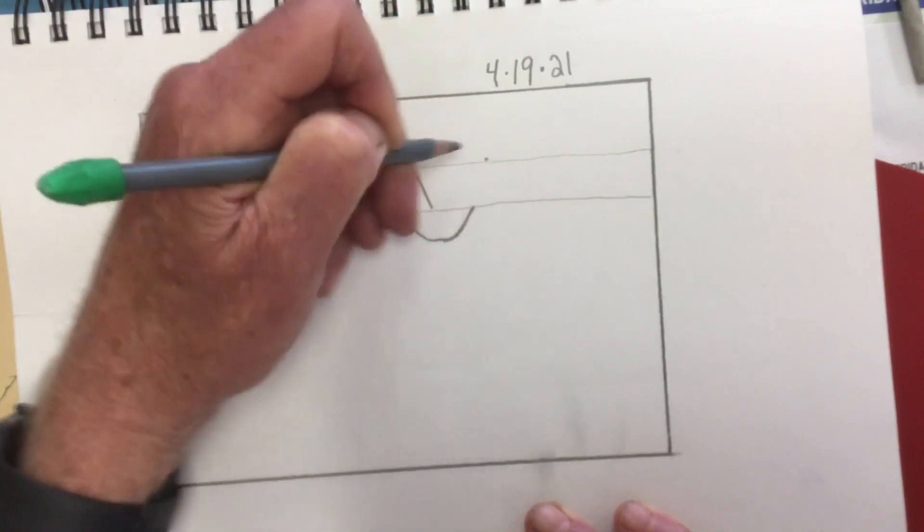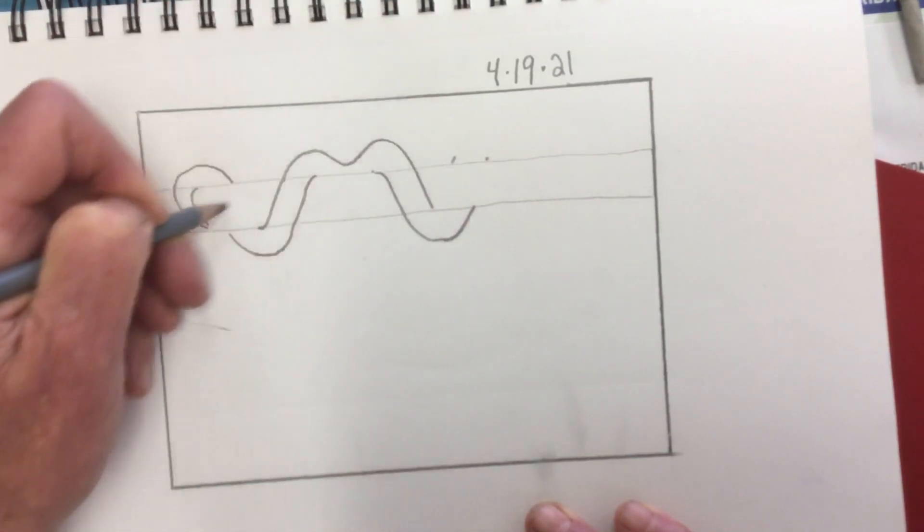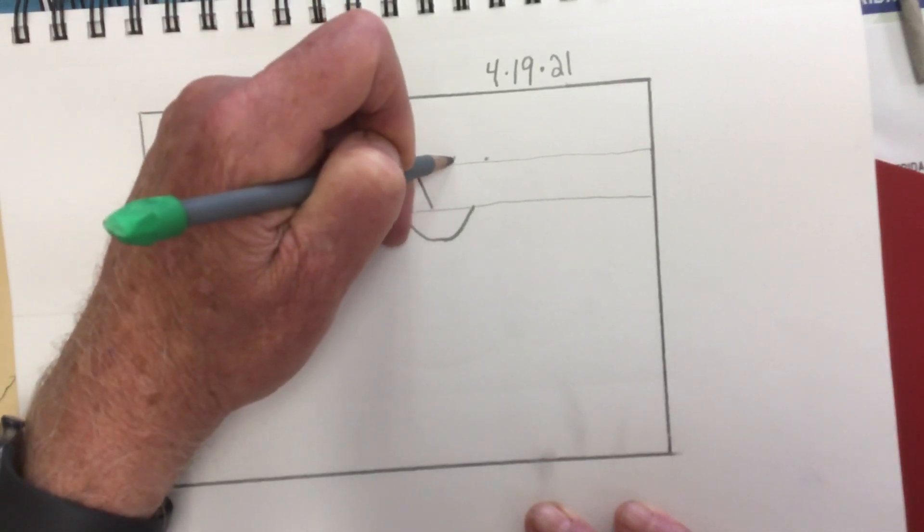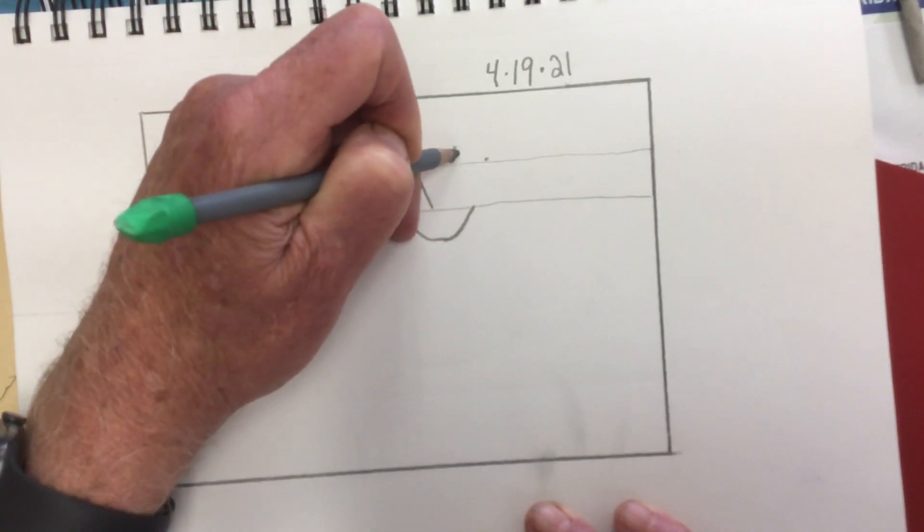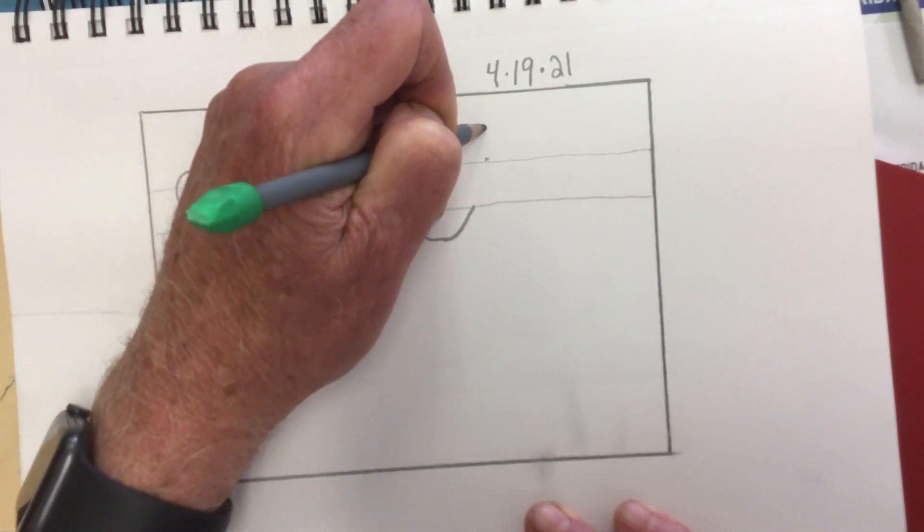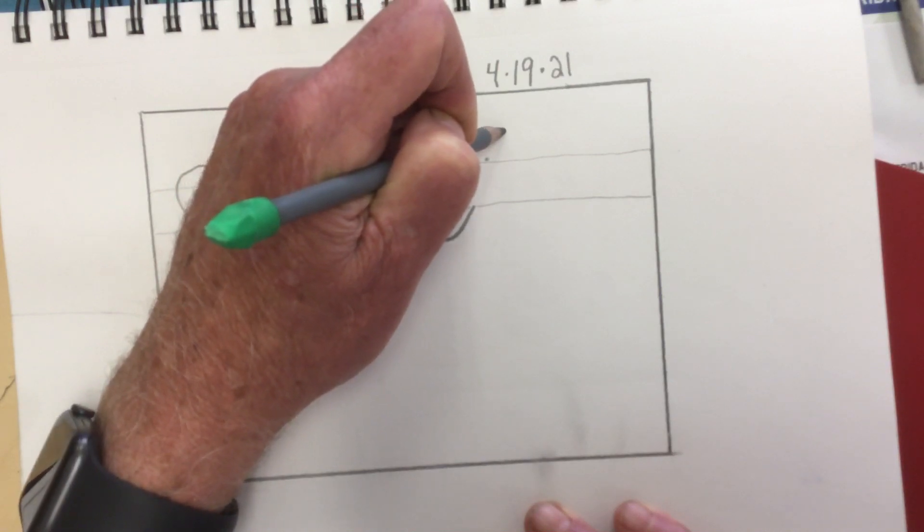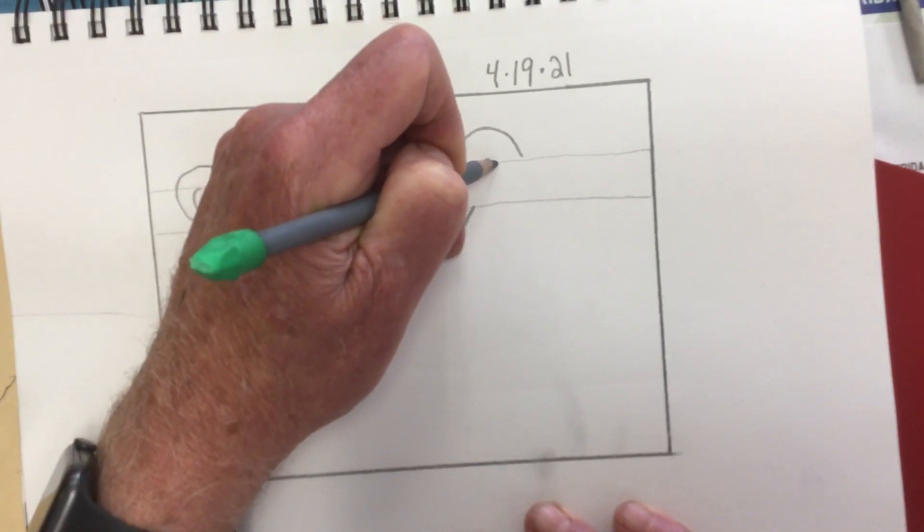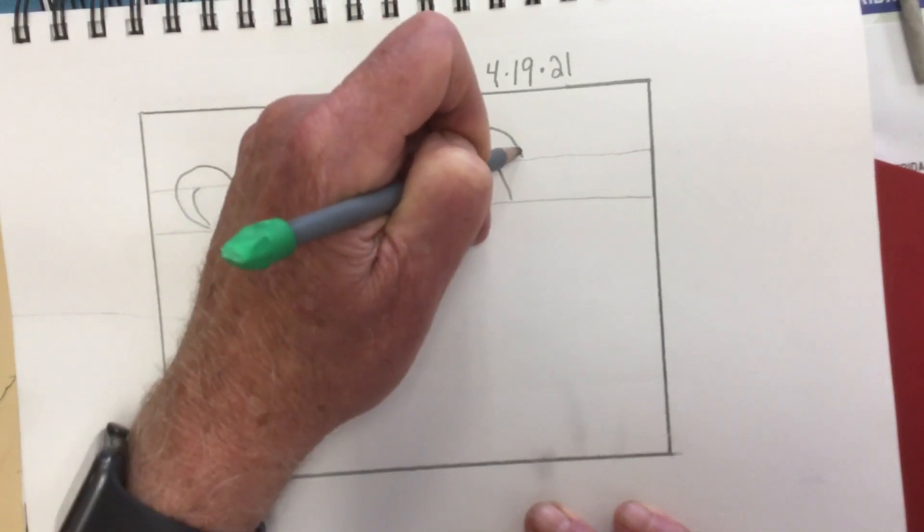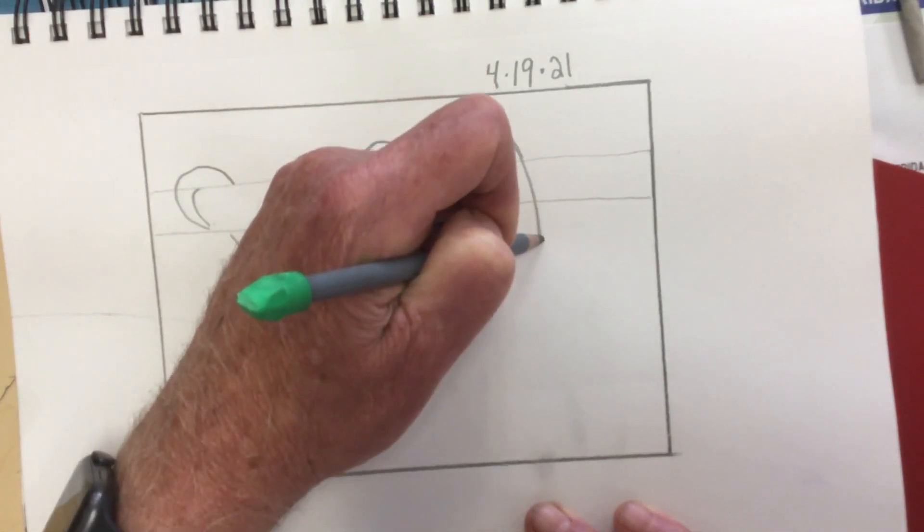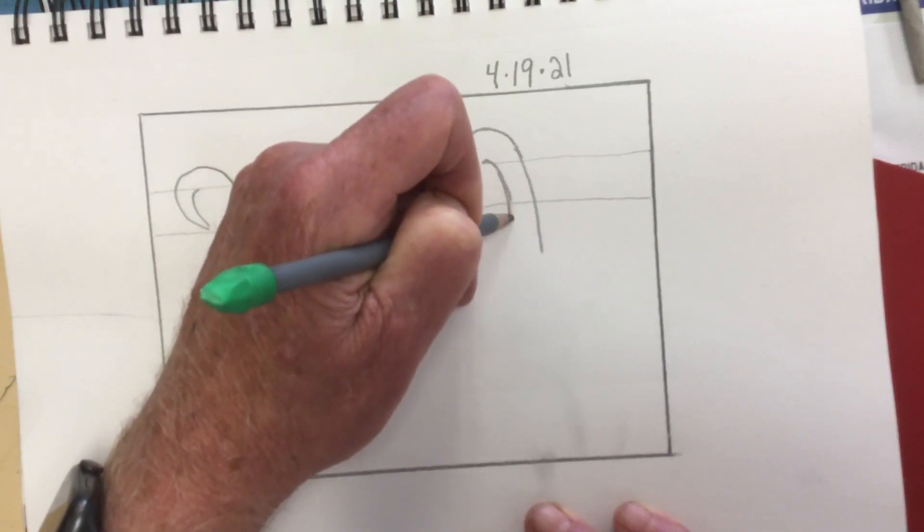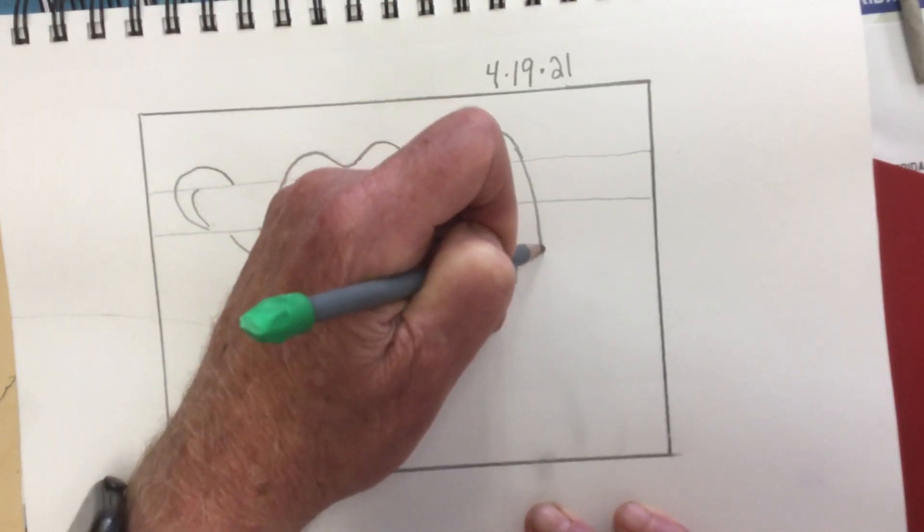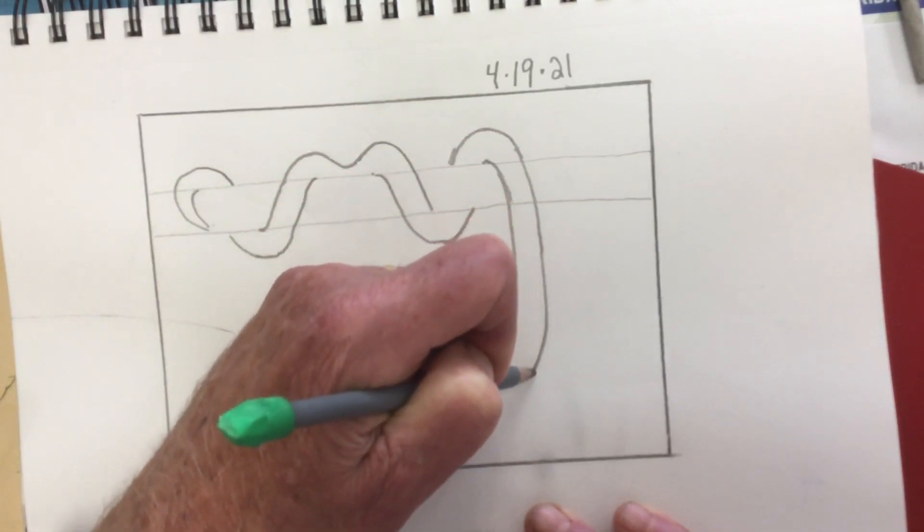One of the tricks to this is you want to try to keep the width of the snake as equal as you can. You can adjust this a little bit as you go along.